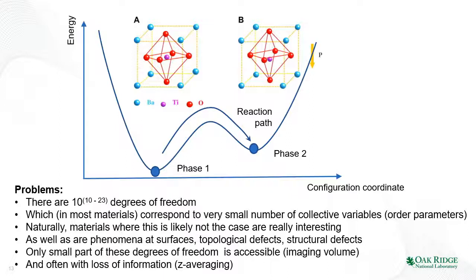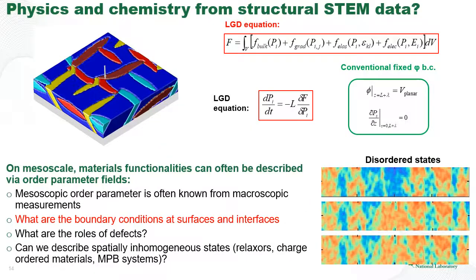The order parameter means that a system of multiple unit cells behaves as if there is only one parameter controlling the behavior of all unit cells. However, not all materials behave like that. Some materials, such as ferroelectric relaxors, Kitaev materials, or morphotropic phase boundary materials, have outstanding physical properties in which the presence of an order parameter is not a priori known. Also, the behavior will be different in the vicinity of surfaces, topological defects, or structural defects. Experimentally, we get only information about the average behavior of the material from macroscopic measurements.